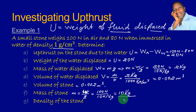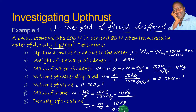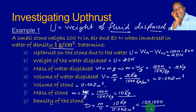From the mass of the stone and the volume of the stone, we can get the density of the stone. Density is equal to mass over volume. The mass of the stone is 10 kilograms and its volume is 0.002 metres cubed. This gives us 10 divided by 0.002, which equals 5000 kilograms per metres cubed.